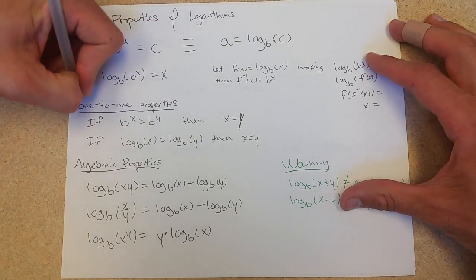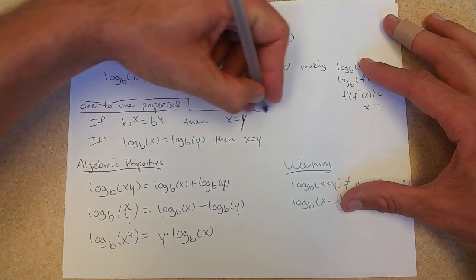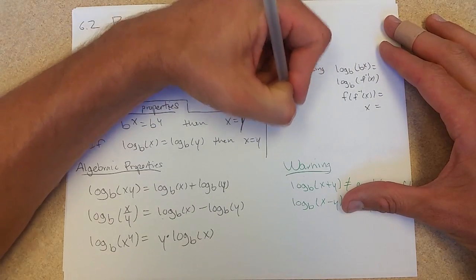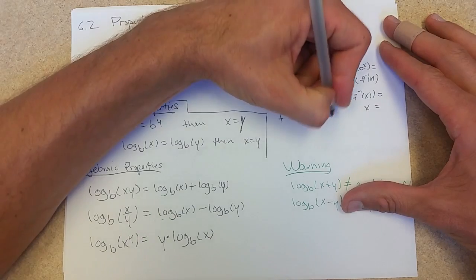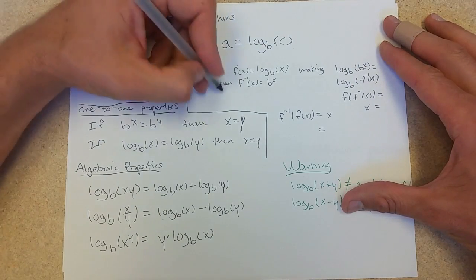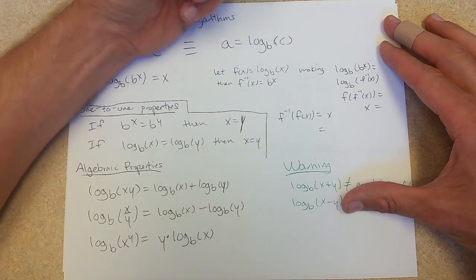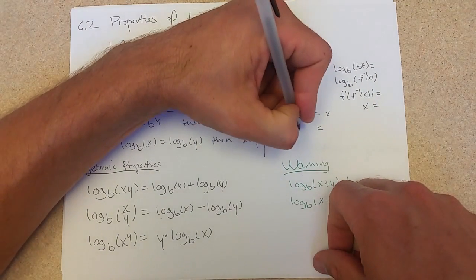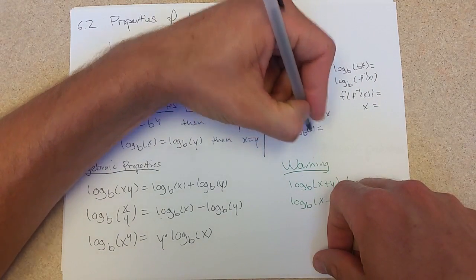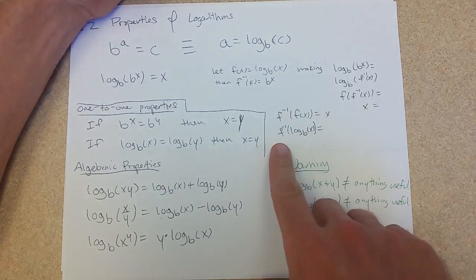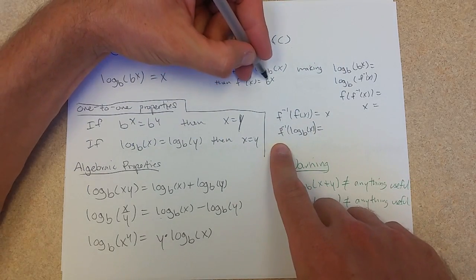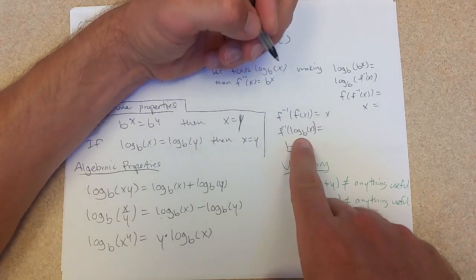I could also compose these the other direction. Let me get a little bit crowded here. If I want f inverse of f of x, well, first of all, they'd cancel out. What would they be? f inverse is, we'll go inside. So log base b of x. What is f inverse? It takes base b and raises it to this power.